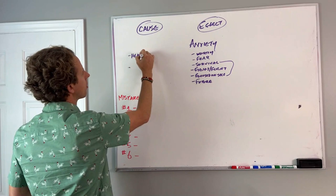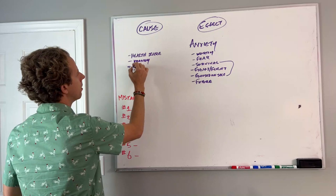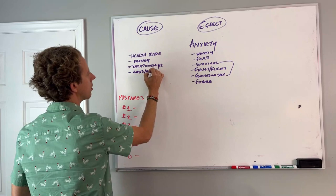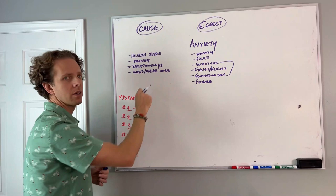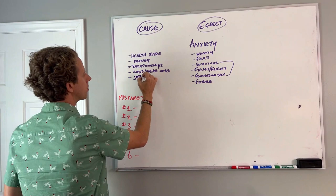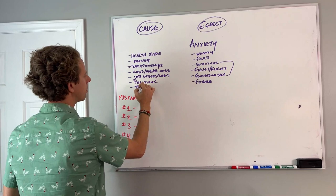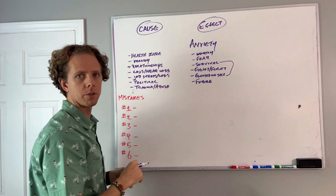We're going to demystify some of that. There are some major things that typically result in anxiety. Things like having a health scare, money when you have challenges with money, relationships, loss or near loss. Loss could be loss of a relationship, a parent, a child. Near loss could be when someone is in a traumatic accident and you nearly lose them, but it gets you thinking about how you're going to cope. Job stress and loss, to some degree political, trauma and abuse. We could go on.